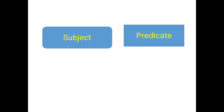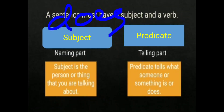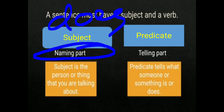Subject means doer — jo us cheez ko karta hai. Aur predicate batata hai ki karta kya kar raha hai. In simple words, jo naming part hota hai use hum subject kehte hain, aur jo telling part hota hai — jo batata hai karta kya kar raha hai — use hum predicate kehte hain. Subject is the person or thing that you are talking about. Predicate tells what someone or something is or does.